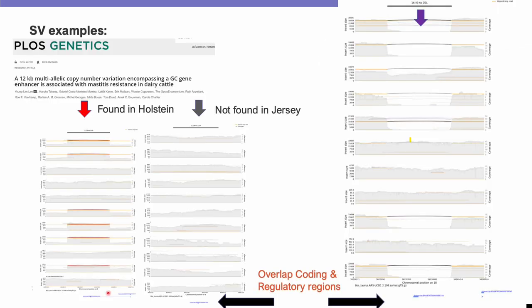Using this data, we are able to confirm structural variants previously known in the literature. For example, this is a 12 Kb copy number variant found exclusively in the Holstein cohort but not in the Jersey cohort. We also have the capability to detect new and novel structural variants exclusive to one breed. For example, a 14 Kb deletion occurring only in Holstein overlaps a transcript annotated as a pheromone-coding gene. However, we would like to further investigate and confirm the function of this structural variant in the future.